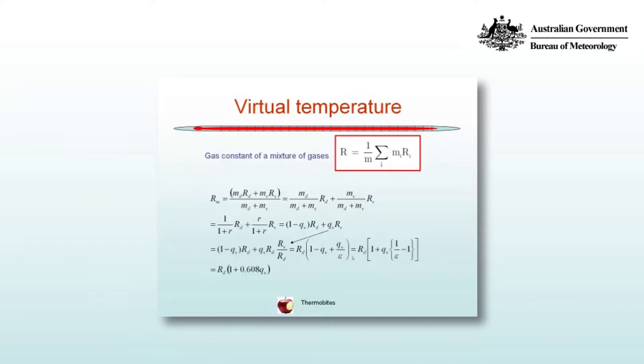For the first expression that gives us 1 on 1 plus R by RD and the second expression R on 1 plus R by RV. In an earlier video we saw that the definition of the specific humidity QV was R on 1 plus R. So we can replace the R on 1 plus R in the second expression.